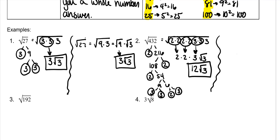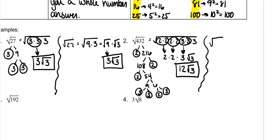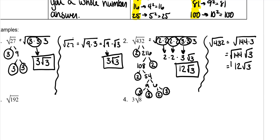Now, if you can see that the square root of 432 is also the square root of 144 times 3 — 144 is a perfect square — so that's the square root of 144 times the square root of 3. The goal of this method is to find the largest perfect square that goes into the number. The square root of 144 is 12, and then times the square root of 3.